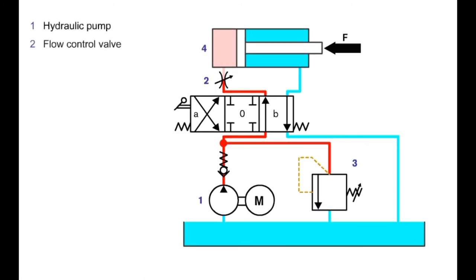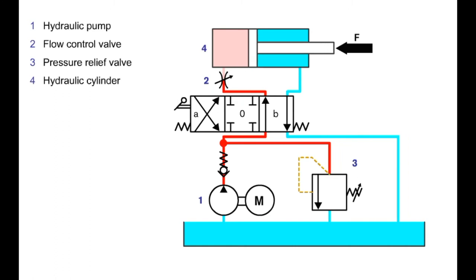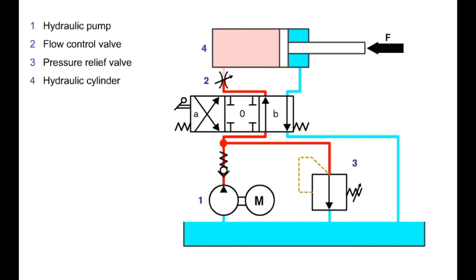The following pressures occur with a flow control valve in a hydraulic system when extending the hydraulic cylinder, depending on the position of the flow control valve. Between the hydraulic pump and the flow control valve, we obtain approximately the pressure regulated by the pressure relief valve as soon as it is opened. Between the pressure relief valve and the hydraulic cylinder, we obtain an approximate pressure which corresponds to load F.